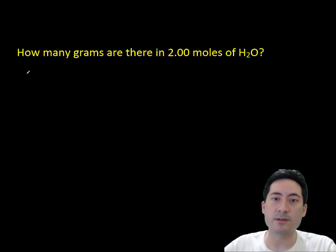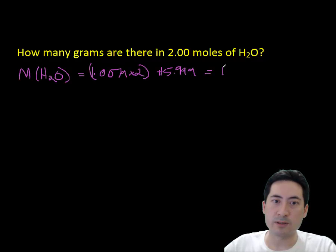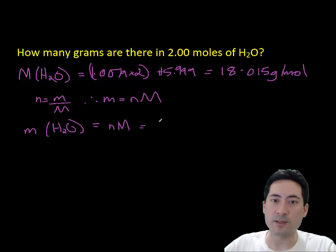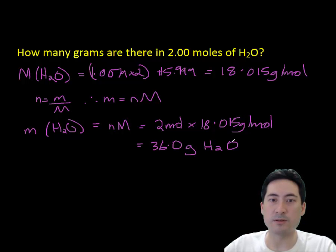Next question, how many grams are there in two moles of H2O? Again, I'll just work out the molar mass of H2O first, and I can rearrange the formula. Substituting into the formula, 2 times 18, that gives me 36 grams of H2O when I have two moles of H2O.